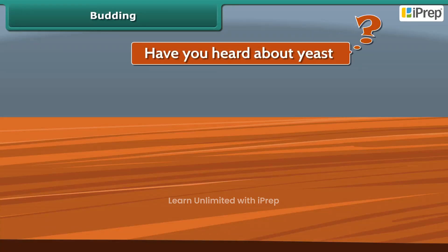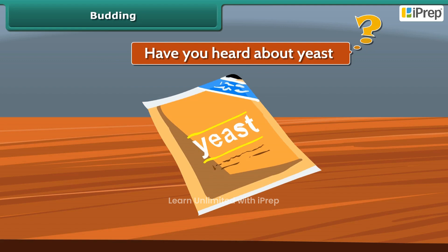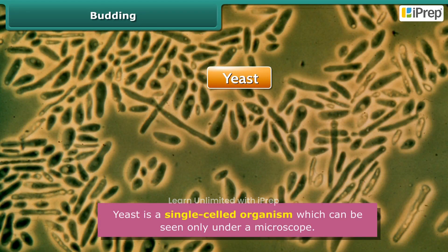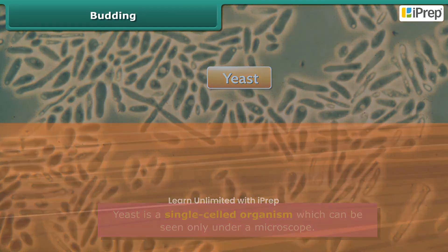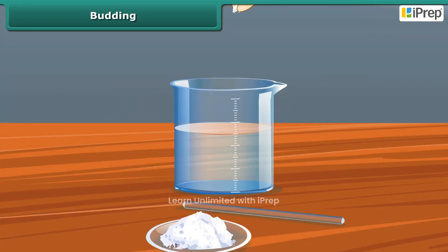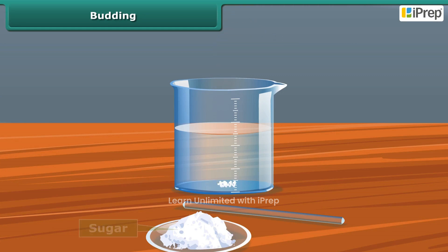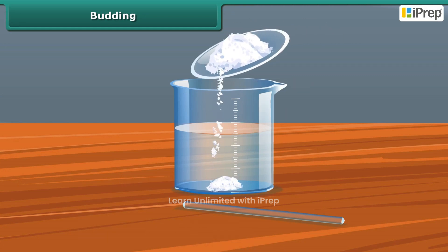Have you heard about yeast? It is a single-celled organism which can be seen only under a microscope. Let us see how they grow and multiply. Take a pinch of yeast powder and place it in a beaker with some water. Add some sugar and swirl to dissolve it.